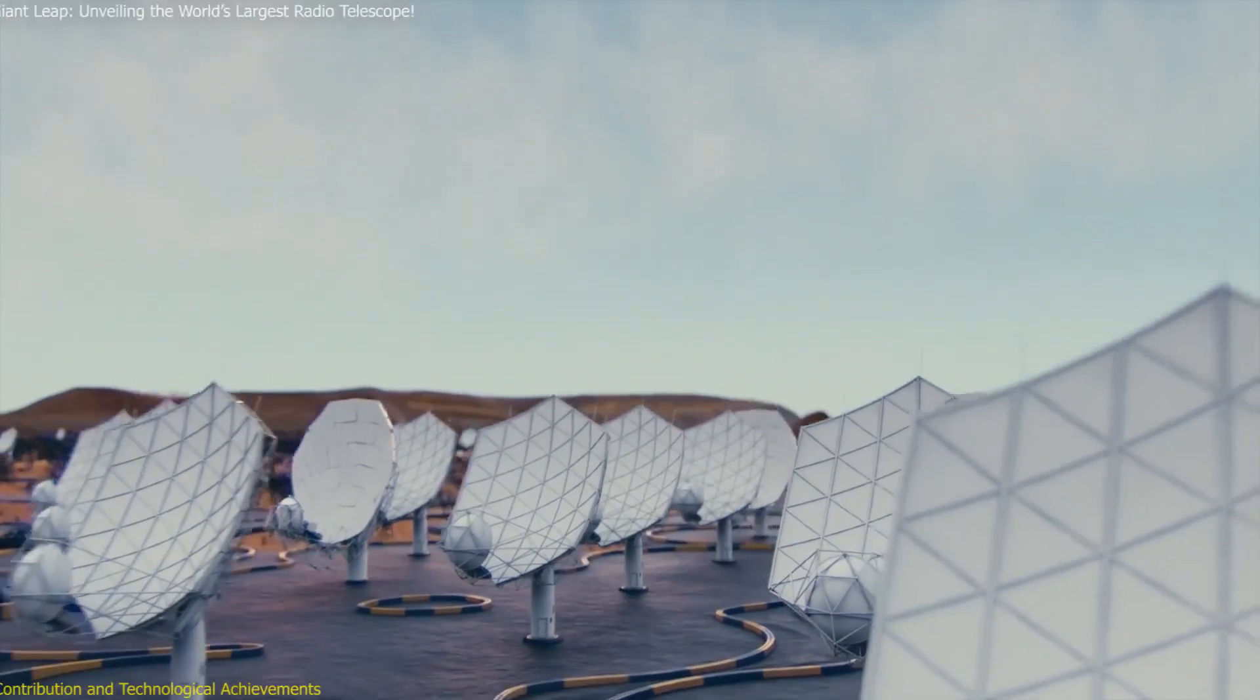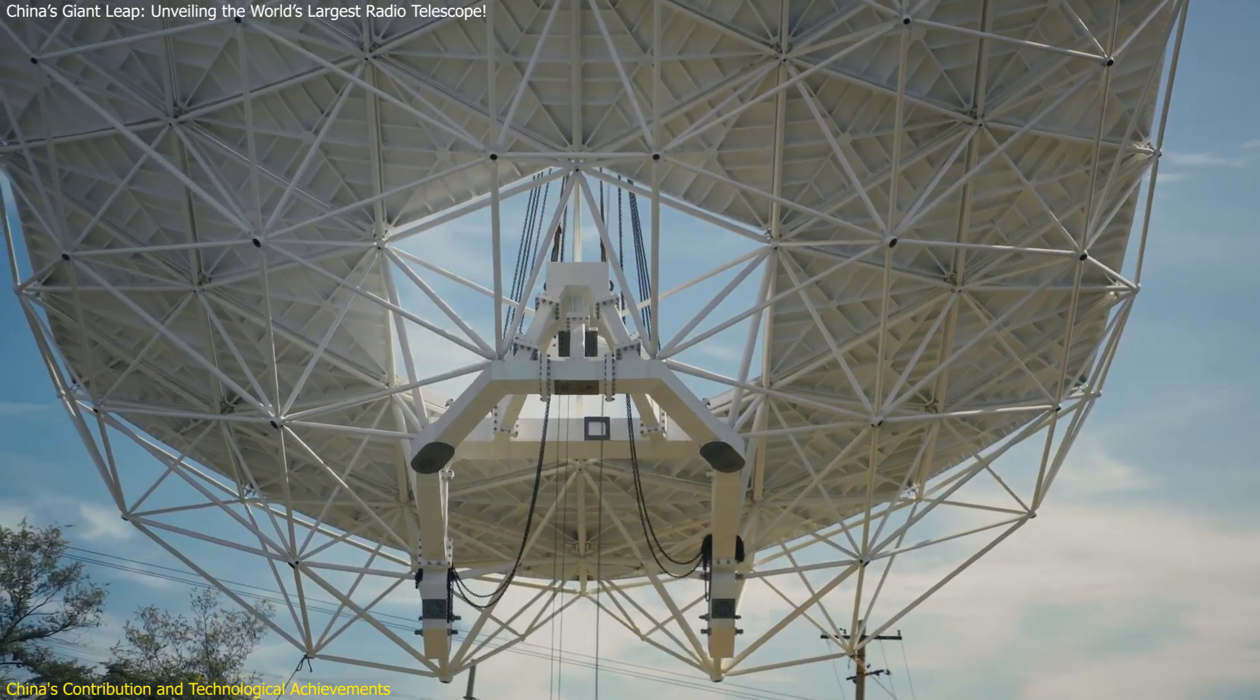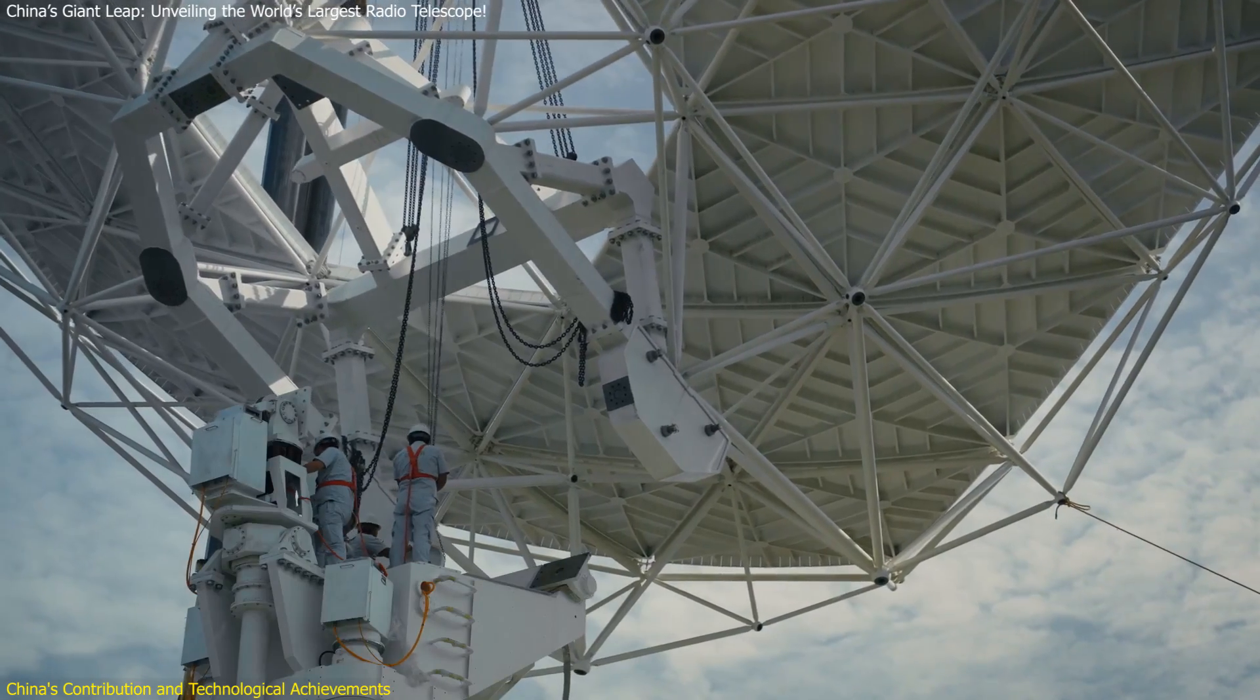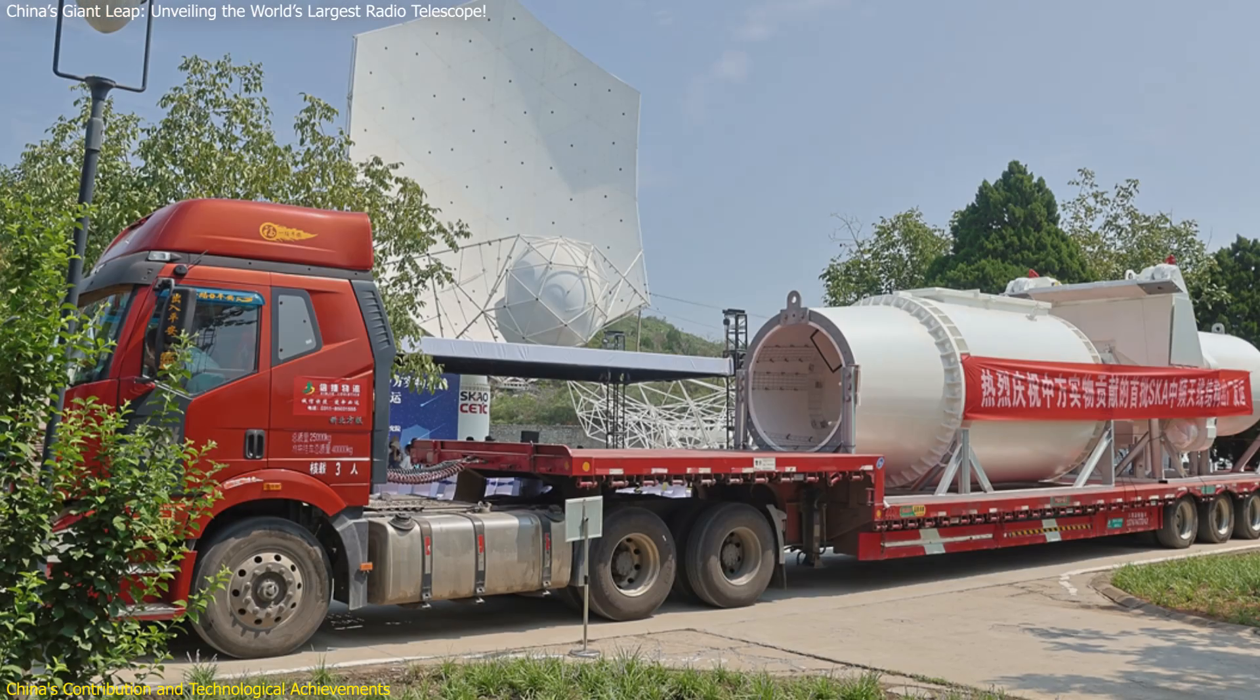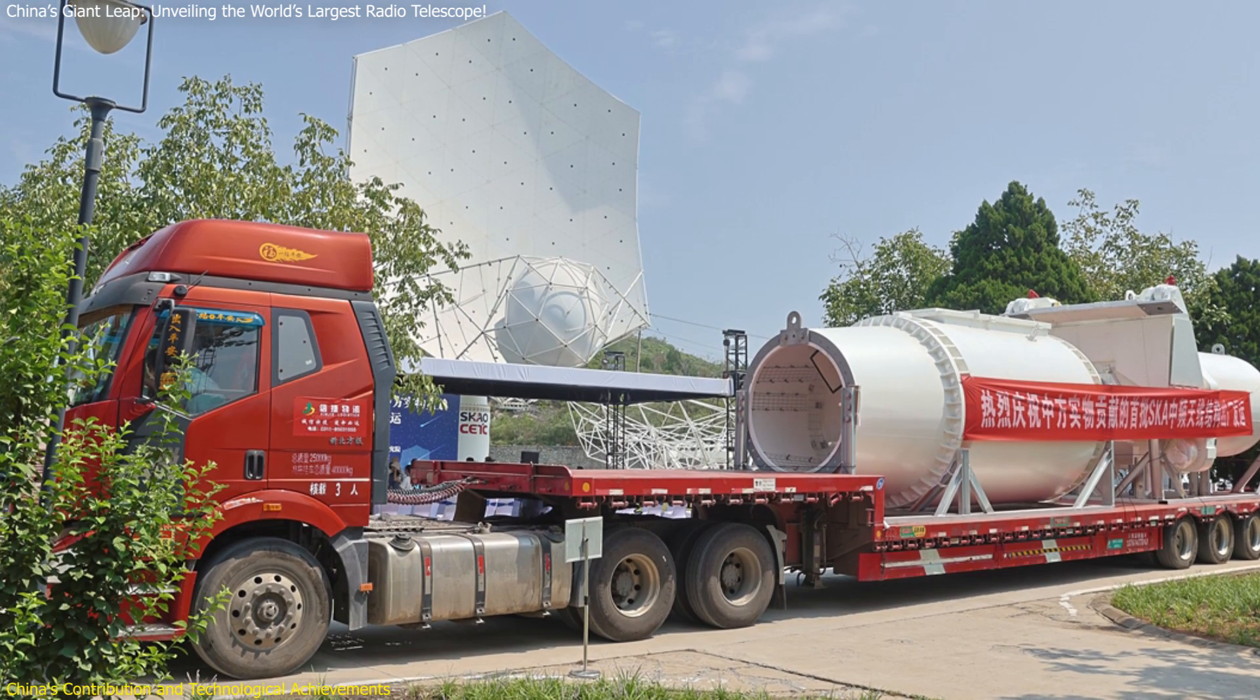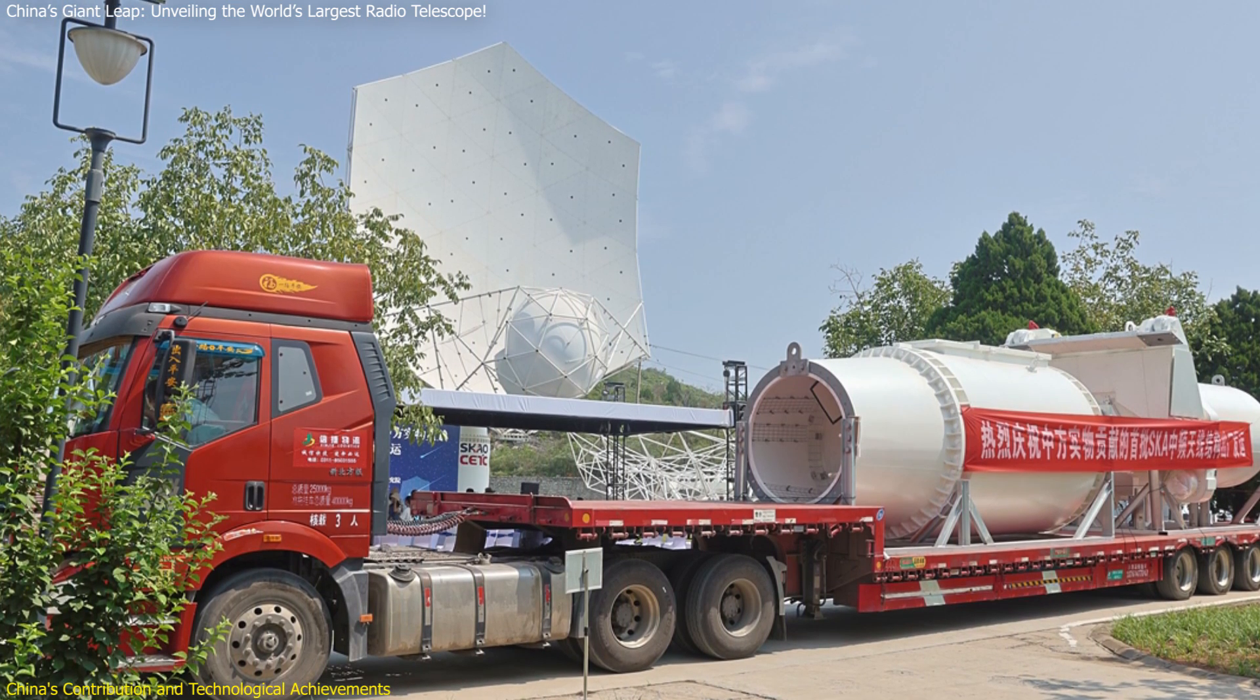China plays a pivotal role in the SKAO project as one of its founding members. The country is responsible for the design, manufacturing, and deployment of the middle-frequency antenna dishes, known as SKAO-MID. These dishes form the core facility of the middle-frequency array within the SKAO. Recently, China achieved a significant milestone by delivering the first batch of these antennas to South Africa, marking the project's transition from the design phase to mass production and deployment.